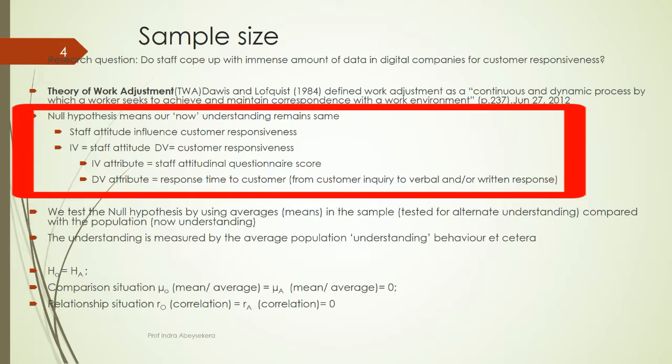We state the null hypothesis as: staff attitude influences customer responsiveness. We state this in relation to our research question, using the theory. We use staff attitude as the independent variable and customer responsiveness as the dependent variable. To make it measurable, staff attitude can be obtained through a staff attitudinal questionnaire score given to staff to fill out.